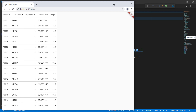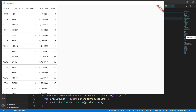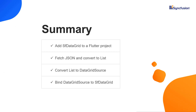Finally, let me show you how this app works on the desktop. Stop the application, change the device to Windows, and run the application. We can see the data grid in a system window. To summarize: you saw how to add the Syncfusion Flutter data grid widget to a Flutter project, how to fetch JSON data from an online source and convert it to a list collection, and how to create rows using the data grid source class and bind them to the SFDataGrid. You can download this working example from the GitHub and documentation links in the video description. You can also check whether you are eligible for a community license, which gives you a free license key to use Syncfusion Flutter products. If you found this video useful, click the like button and subscribe to the channel.